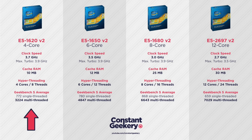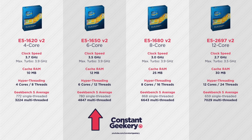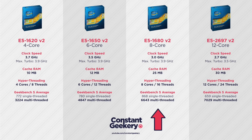Starting with the quad-core, the E5 1620 version 2 runs at 3.7 gigahertz and can turbo up to 3.9 gigahertz, with a 10 megabyte cache. Using Geekbench 5 scores, this CPU averages 772 for single-threaded and 3224 for multi-threaded performance. Stepping up to the 6-core 1650, running at 3.5 gigahertz with a 3.9 gigahertz turbo and 12 megabyte cache, it scores 780 single-threaded and 4847 multi-threaded. The 8-core 1680 runs at 3 gigahertz with a 3.9 gigahertz turbo and 25 megabyte cache, scoring 868 single-threaded and 6643 multi-threaded.